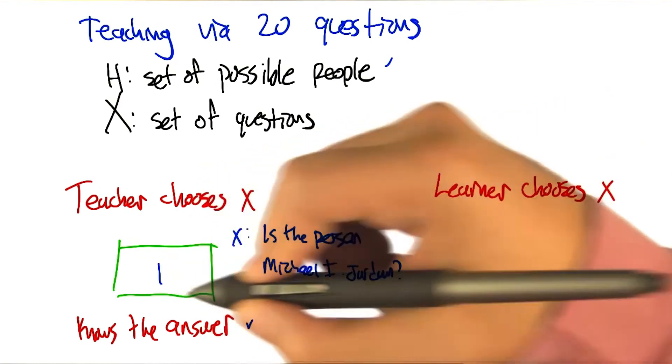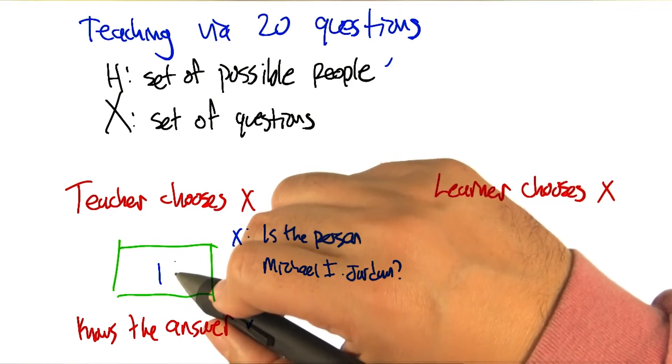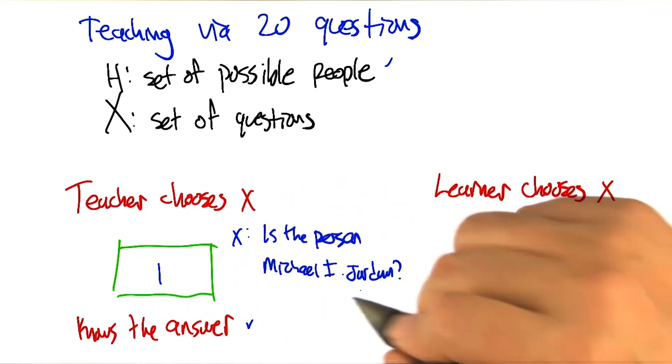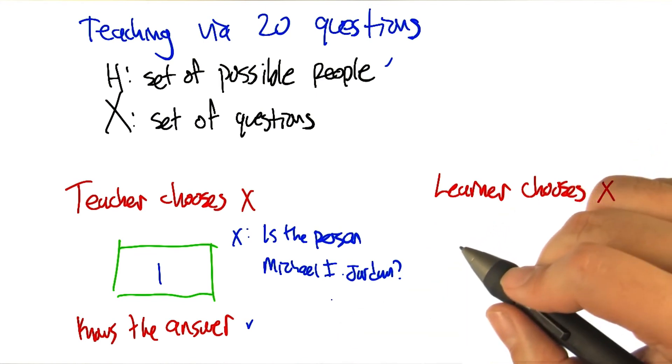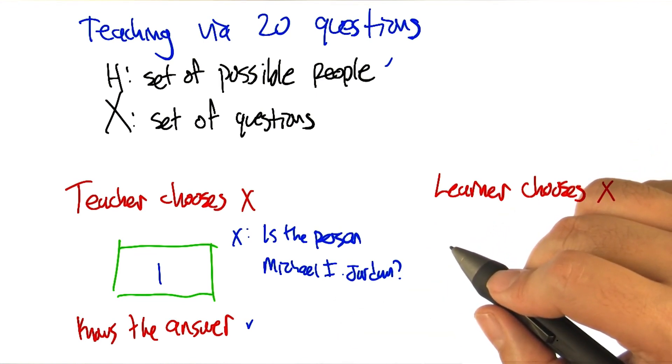Hm, that's true. So, given a sufficiently helpful teacher, you can do this in one. Well, that makes sense, right? So basically, if my questions include, is this the correct hypothesis, then you should always just ask that question. Right.